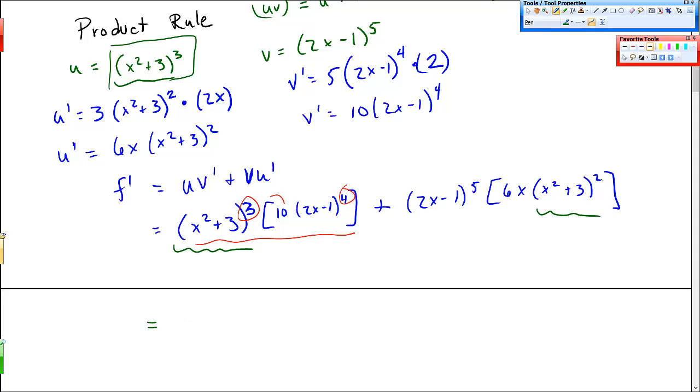So the biggest one that's in both pieces is squared. So let's say I factor out x squared plus 3 squared. And then that leaves me with in this first piece I still have an x squared plus 3 left. I still have a 10. And I still have this 2x minus 1 to the fourth. Plus, I got rid of all the x squareds plus 3. So I get 2x minus 1 to the fifth times 6x in this second piece.